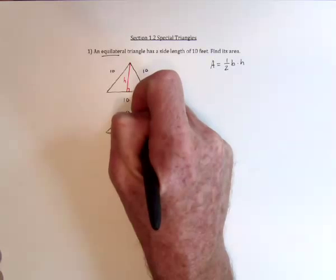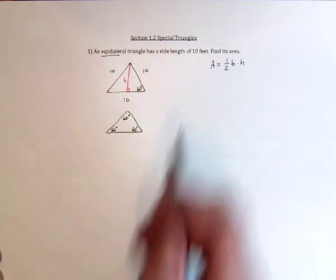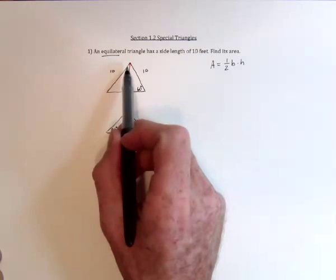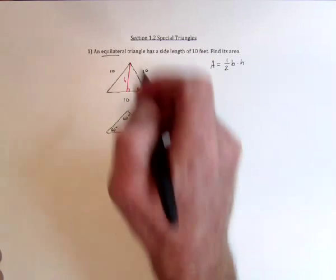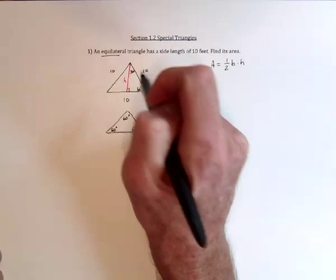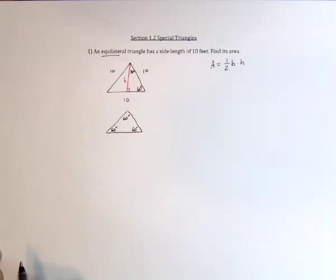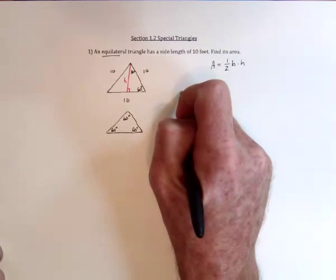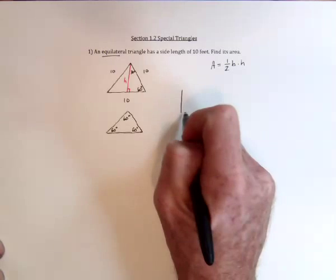So we've got this angle down here is 60. And then when I drew this red line, it cuts the top angle in half. So we've got a 30-60-90 triangle. So I'm just going to move that 30-60-90 triangle over here.